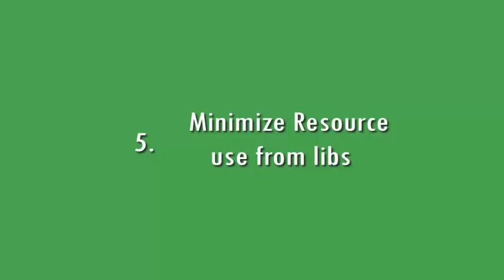Next point: minimize resource use from libraries. When developing an Android application you usually use external libraries to improve your app's usability, which is the best practice to avoid developing native code. Most third-party libraries are tested and optimized in all aspects, so you can use the libraries and reuse their resources for other purposes inside your project.